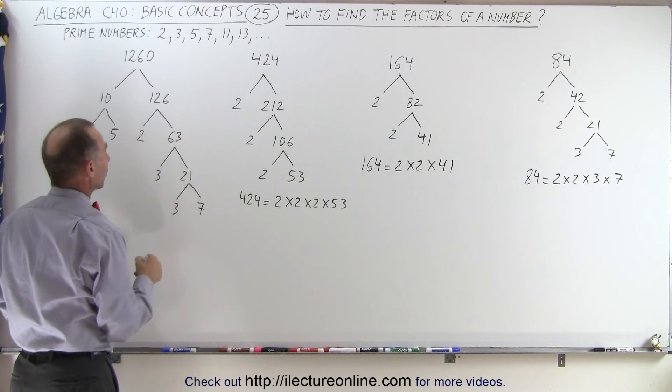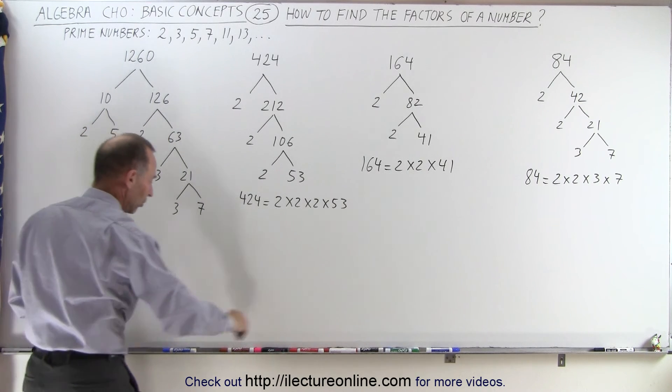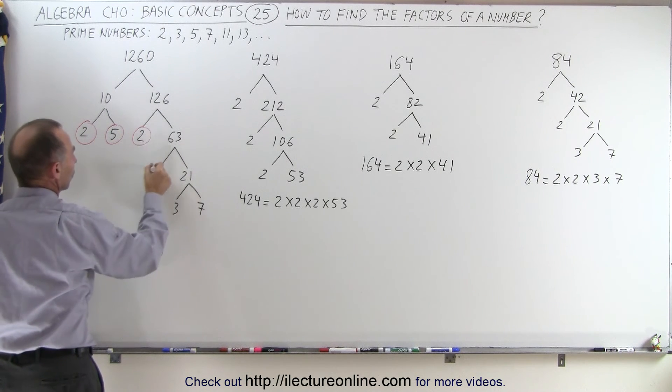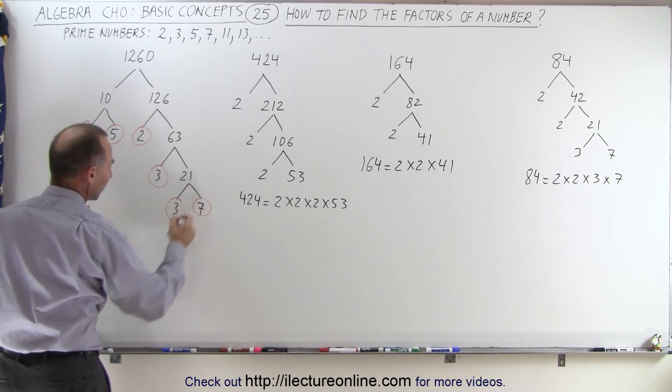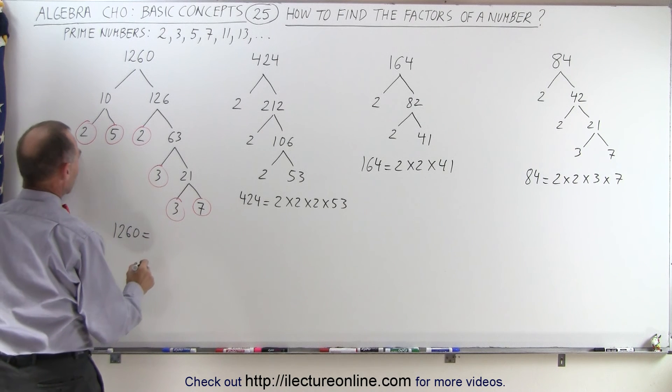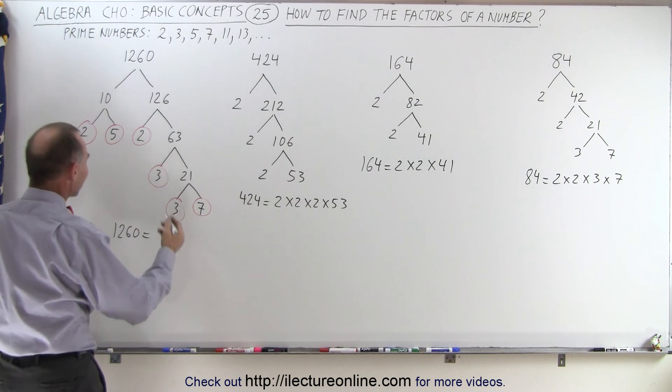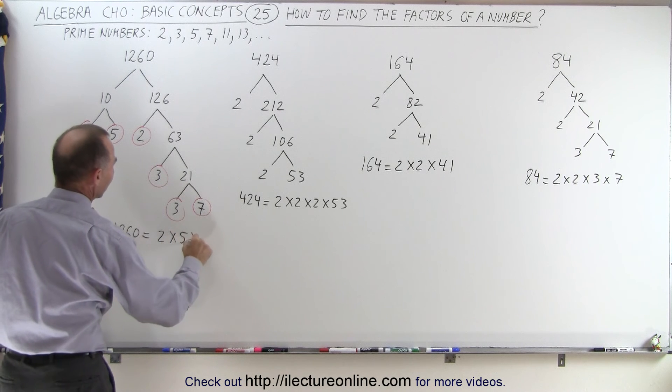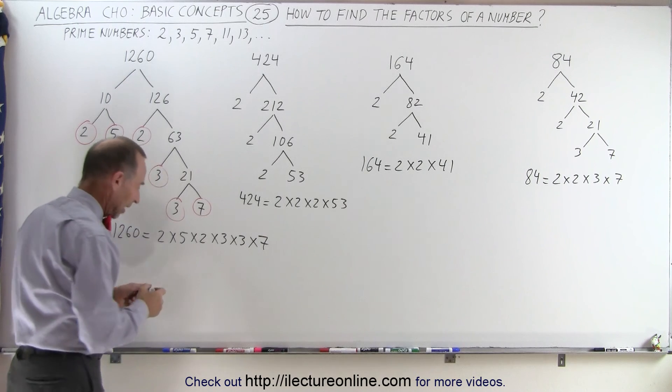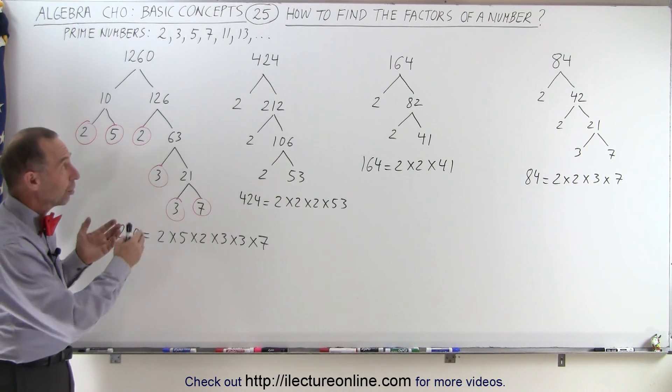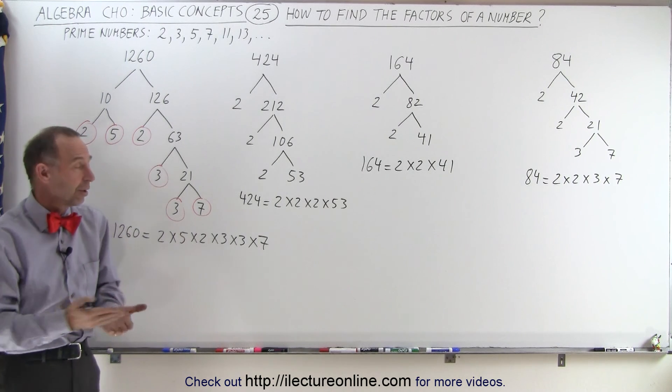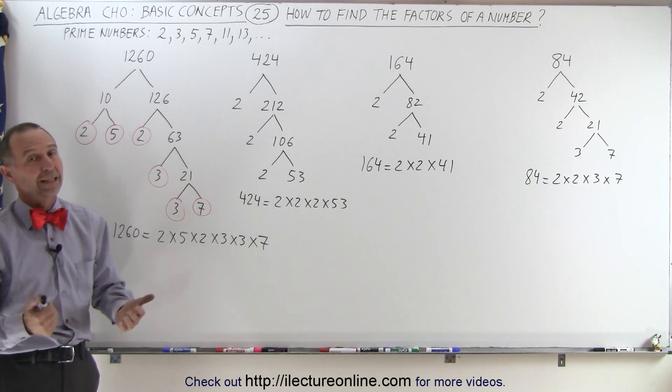So now we have all the branches down to the lowest possible factors: 2, 5, 2, 3, 3, and 7, which means that the number 1260 can be written as the product of 2 × 5 × 2 × 3 × 3 × 7. And so that's the method we can use to take larger numbers and find the factors of each, written as the product of the lowest factors that we can find that way. And that's how it's done.